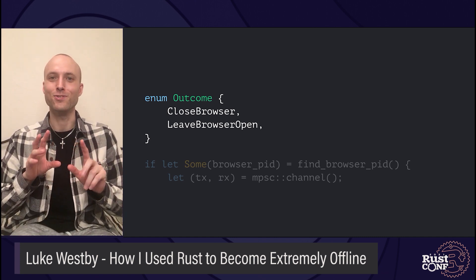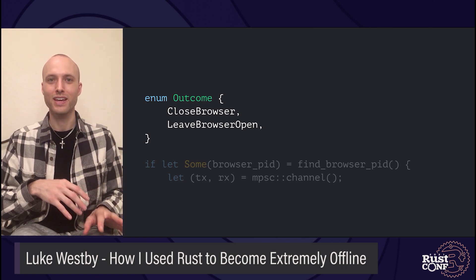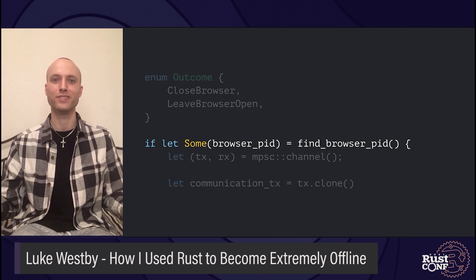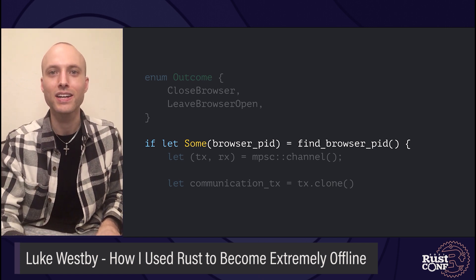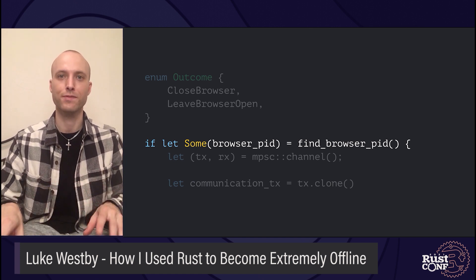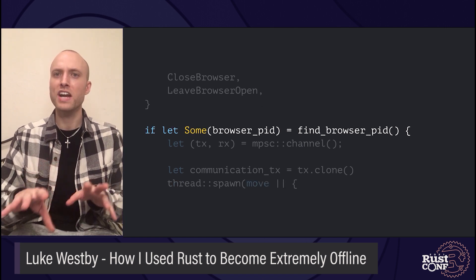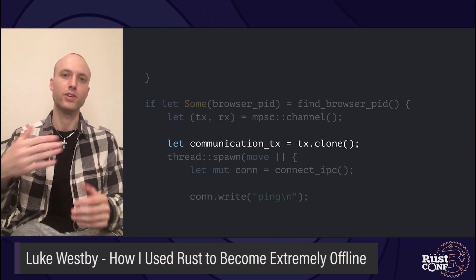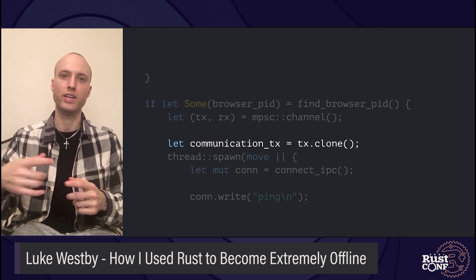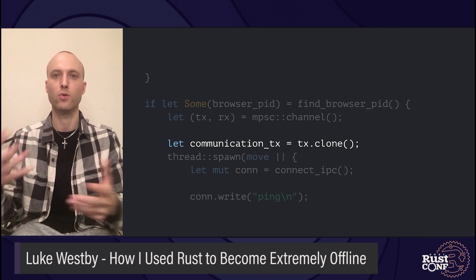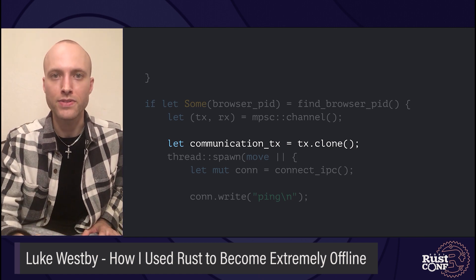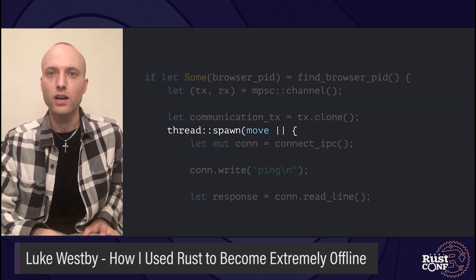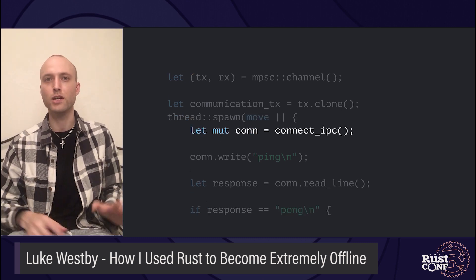If the browser fails to respond through the native messaging host, or responds with something unexpected or incorrect, the daemon is going to shut down the browser — and it'll annoy me into not doing this anymore. Let's get into the code, starting with the daemon. This program is trying to decide to do one of two things: close the browser or leave it open. The first step is to make sure we have a PID for the browser process. If we can't find one, the browser isn't running, so we can just exit. If we do find one, we hold onto it because we'll need it if we have to close the browser later. We're going to coordinate a couple of things concurrently using threads and a channel.